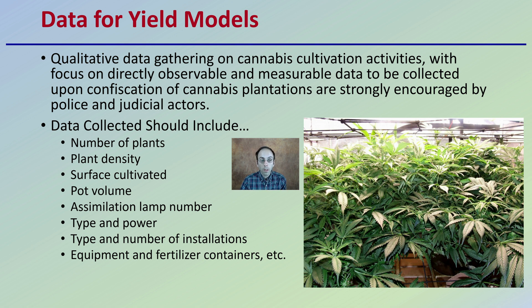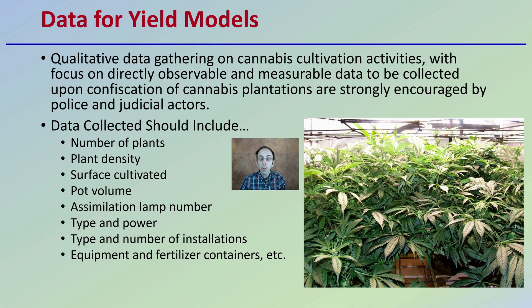What information should growers be keeping track of? That should include the number of plants — it seems obvious — as well as plant densities: how big of an area, how many plants per square meter or square foot. Also the surface being cultivated, the pot or container volume being grown in, the lamp number, the type and power of those lights, the type and number of installations such as the HVAC system, the cooling system, the heating system, as well as equipment and fertilizer containers, among many other things.